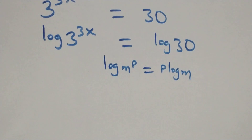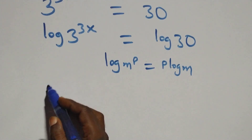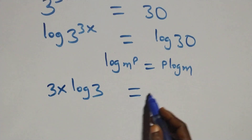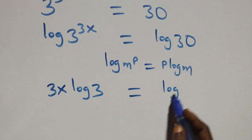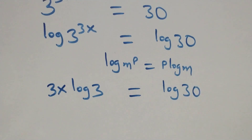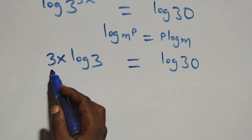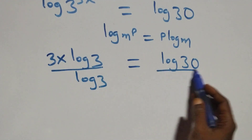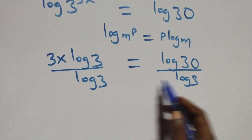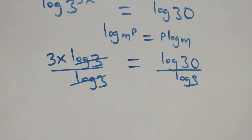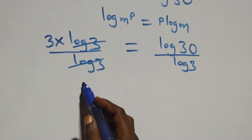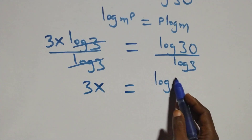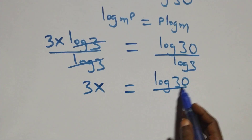That is, this becomes 3x times log 3 equals log 30. Then the next step, we divide both sides by log 3. The log 3 terms cancel each other, and this becomes 3x equals log 30 over log 3.